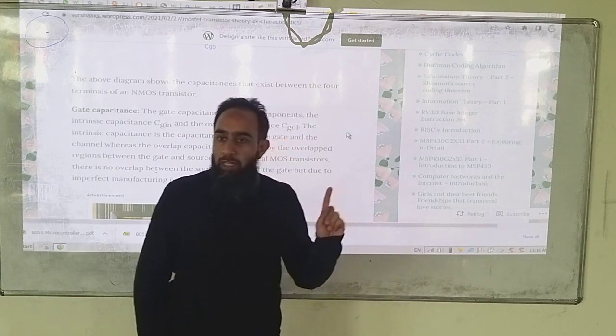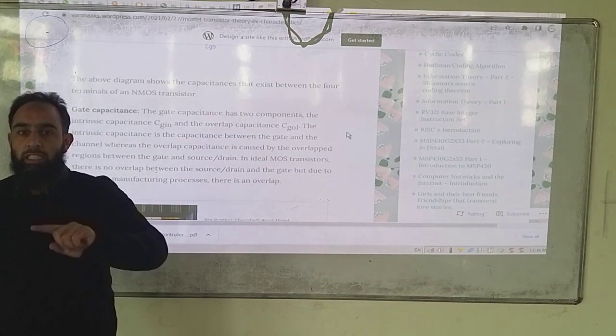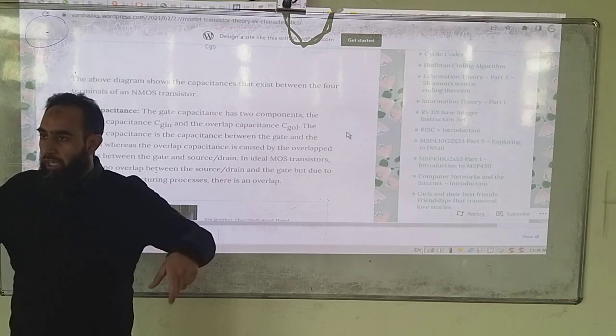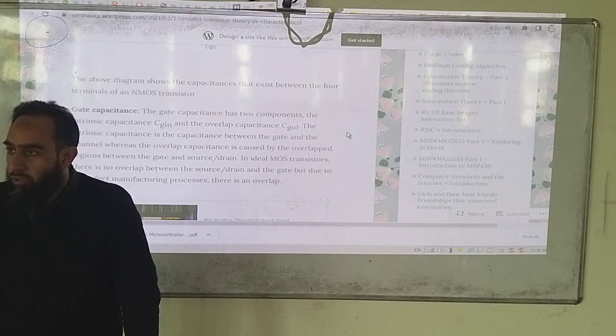So Cgin is an intrinsic capacitor, Cgol is an overlap capacitor that exists between the gate and the channel where the drain and the source overlap with the gate terminals.